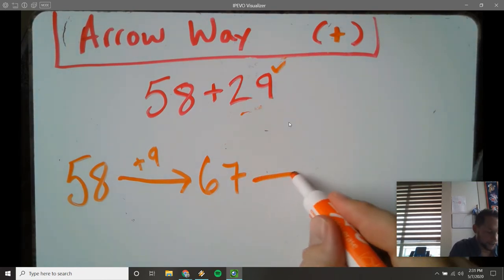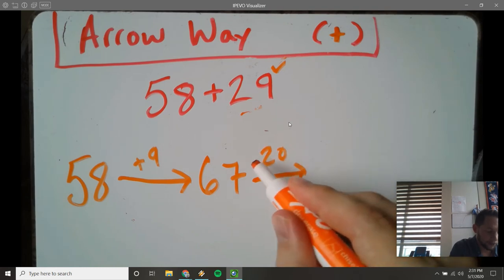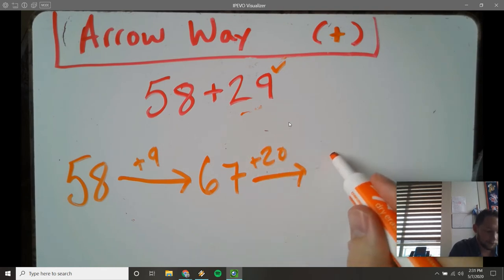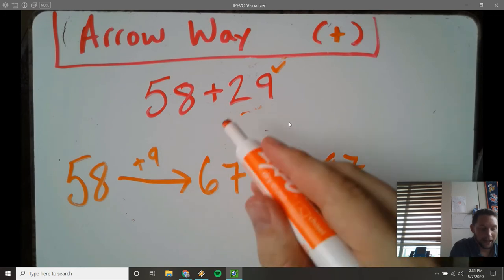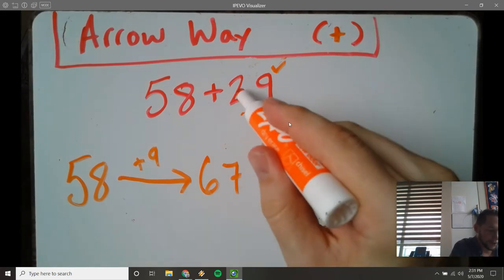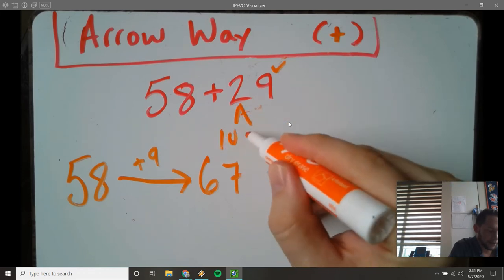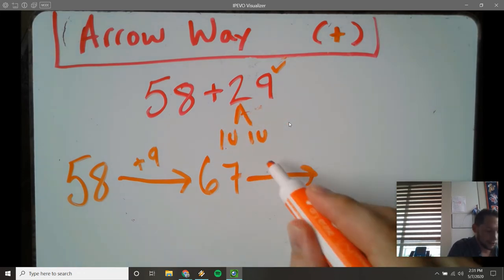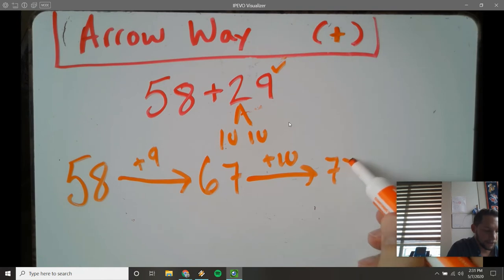So add 20 equals 87. And even if that's too much, I could break this into two tens, a 10 and 10, and I could do plus 10 equals 77, plus 10 more equals 87.